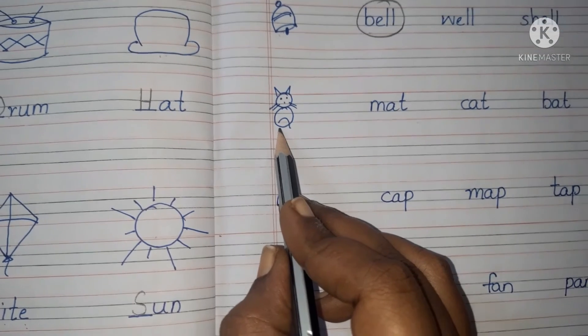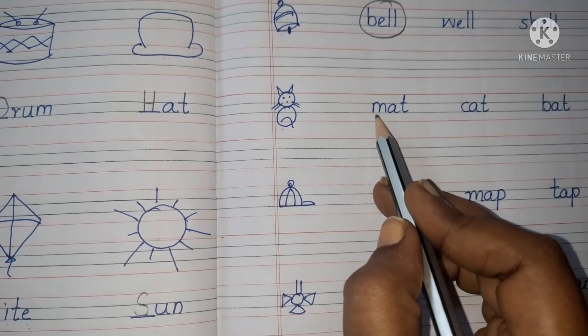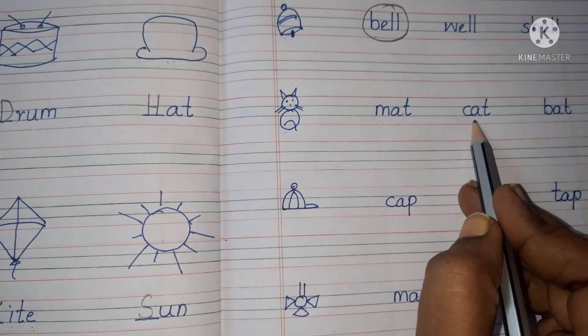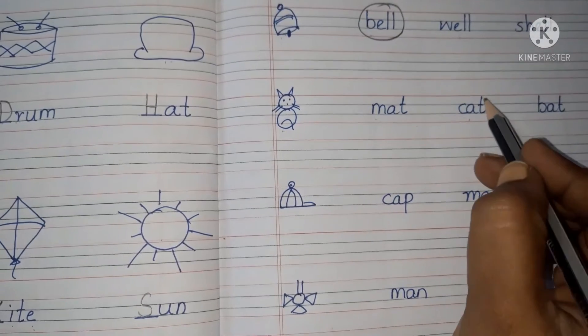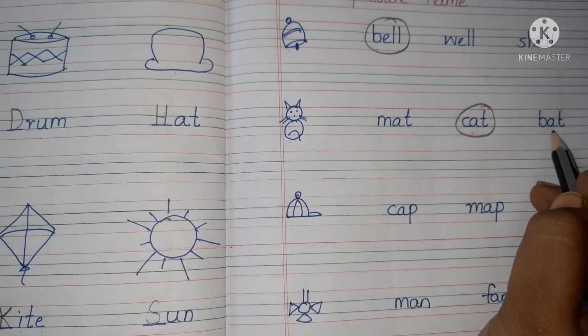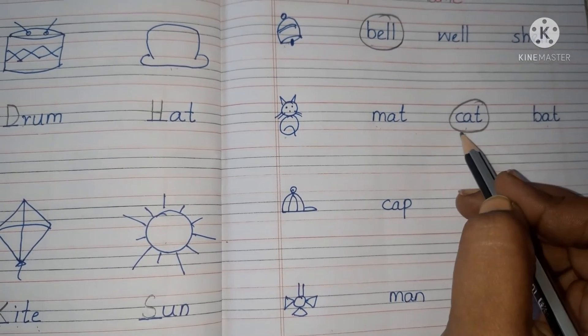Next step. Cat. You know the spelling of cat? See here read. M-A-T mat, C-A-T cat. Yes. This is the one. Is B-A-T bat? No. So this is the correct one.